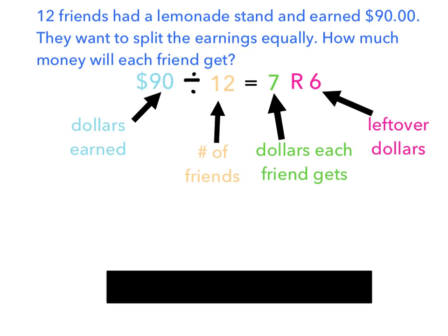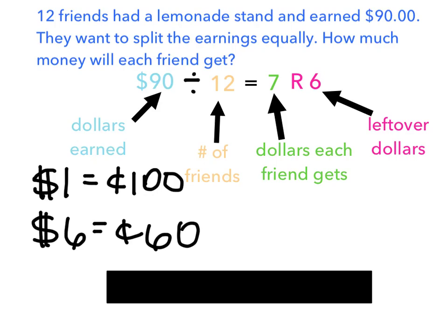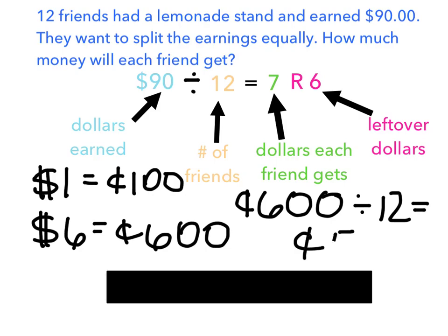Now the neat thing about money is that you can break dollars down into cents and then distribute the cents. So I know that we have 6 leftover dollars. One thing that I know about money is that I know $1 equals the same thing as 100 cents. And I'm going to use that to help me solve this problem. So I right now have 6 leftover dollars, and I know that's the same thing as 600 cents. So what I need to figure out is how can I distribute the 600 cents equally amongst my 12 friends. I'm going to set that up as 600 cents divided by 12 equals something. Now I know that 60 divided by 12 is 5. So 600 divided by 12 is going to be 50 cents.